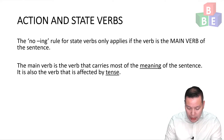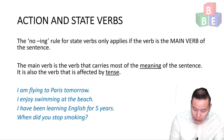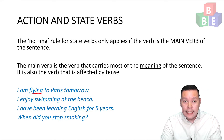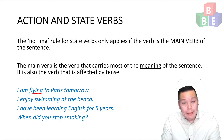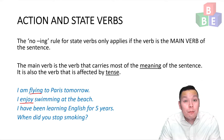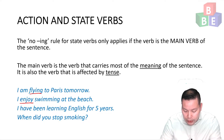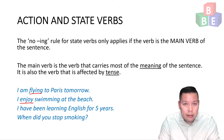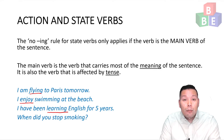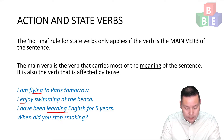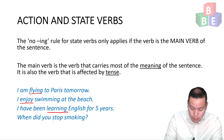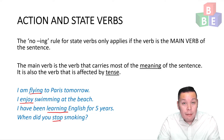For example: I am flying to Paris tomorrow — flying is the main verb, present continuous tense. I enjoy swimming at the beach — enjoy is the main verb, present simple. I have been learning English for five years — learning is the main verb, present perfect continuous. When did you stop smoking? — the main verb is stop, past simple.